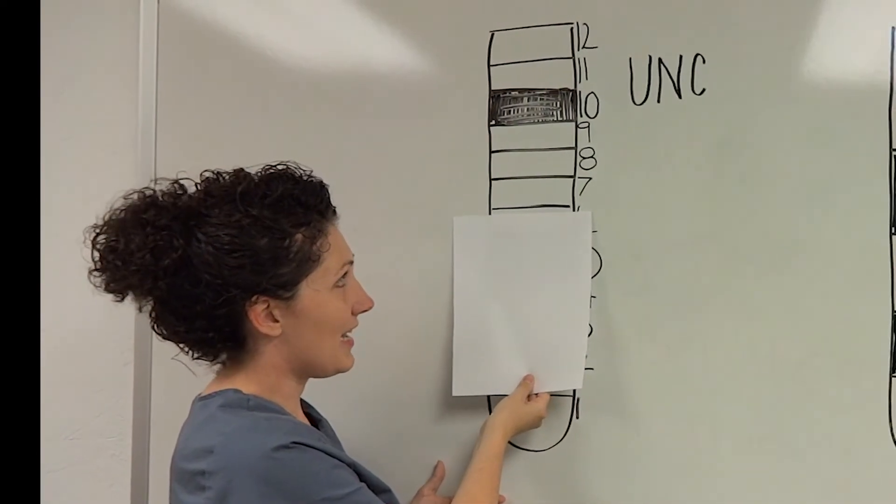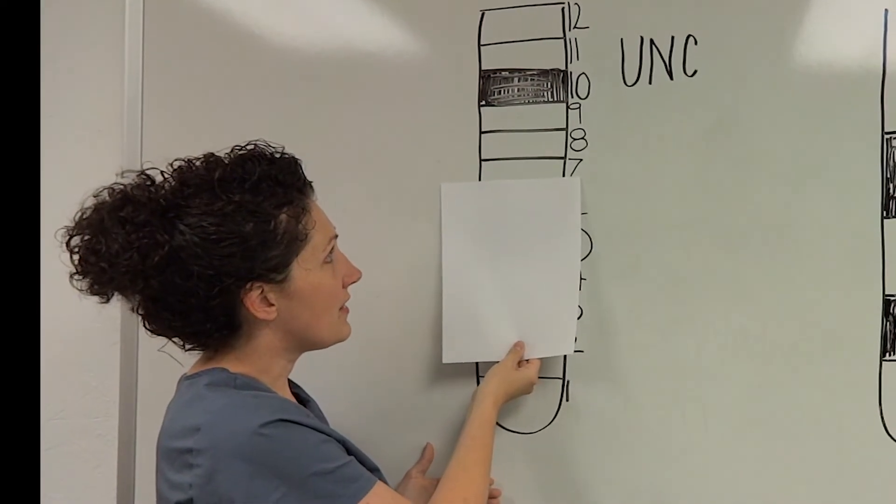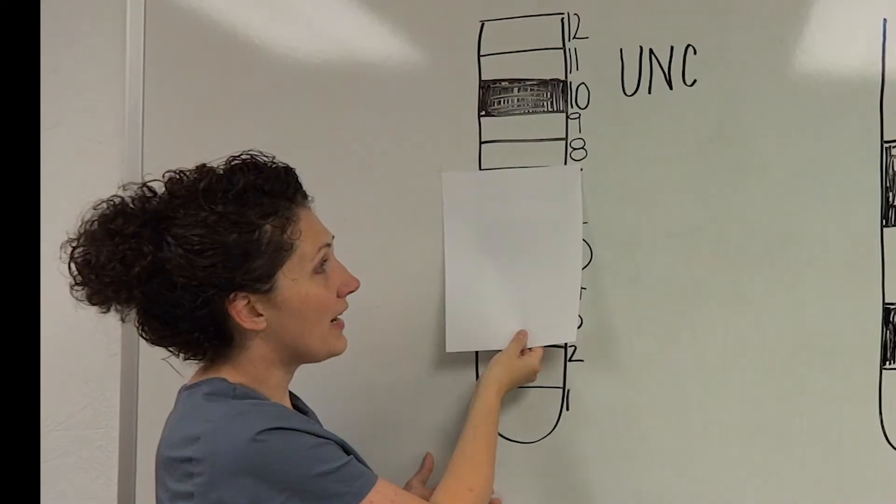If you still see silver there, it's a six. Once the black line and the silver is covered, it becomes a seven. Black line covered is an eight.